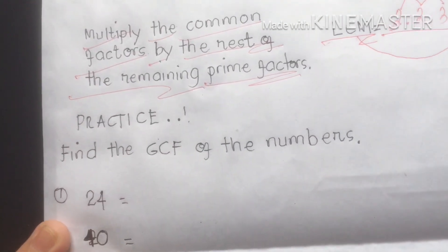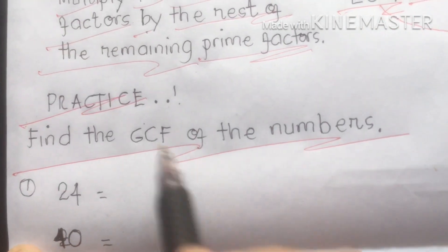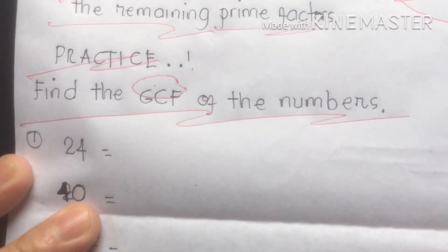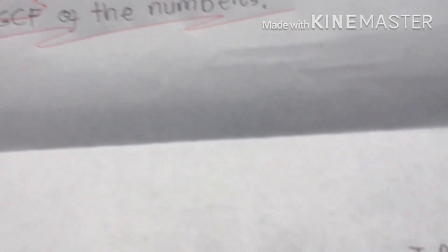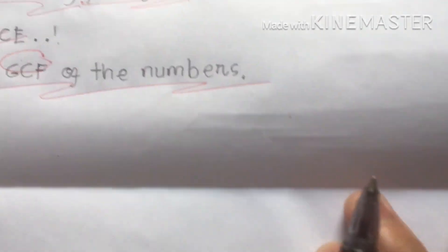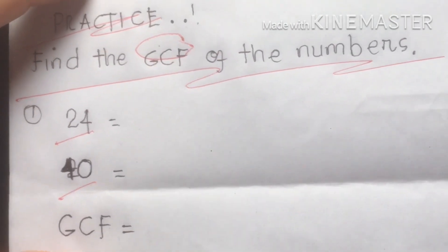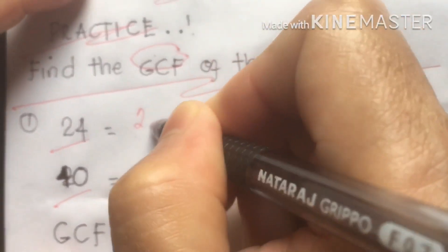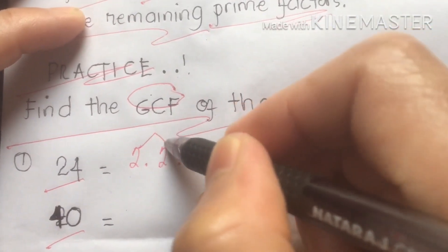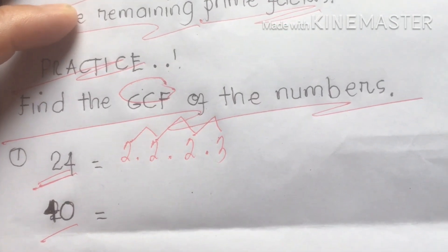Let's practice. Find the GCF of 24 and 40. All we have to do is find the Greatest Common Factor. Let's start with 24: the factor is 2 × 2 × 2 × 3 — two times two is four, times two is eight, times three gives us 24.